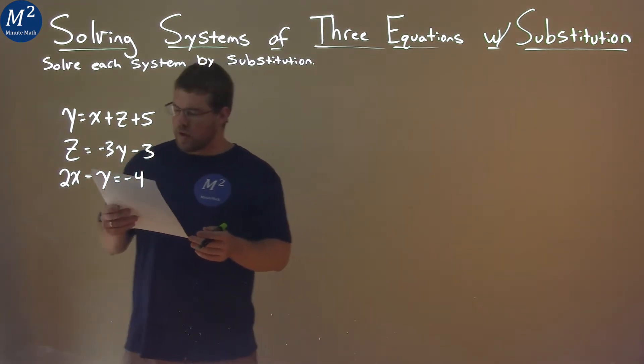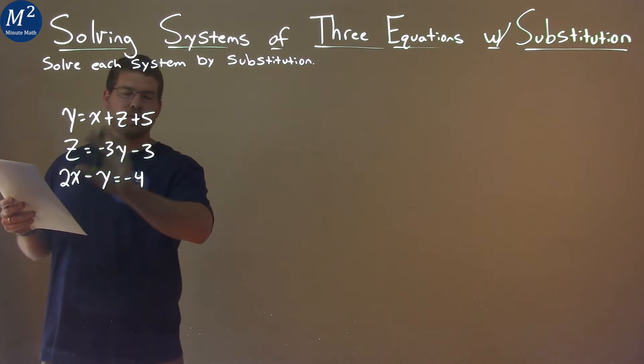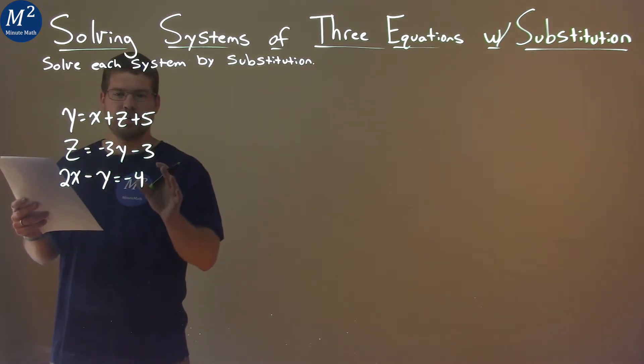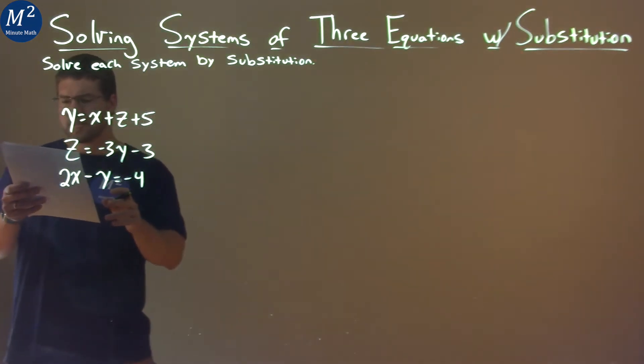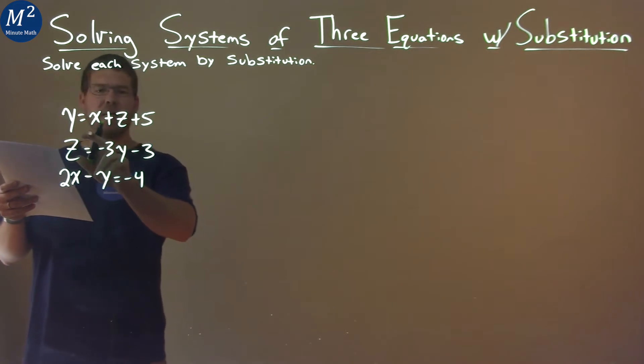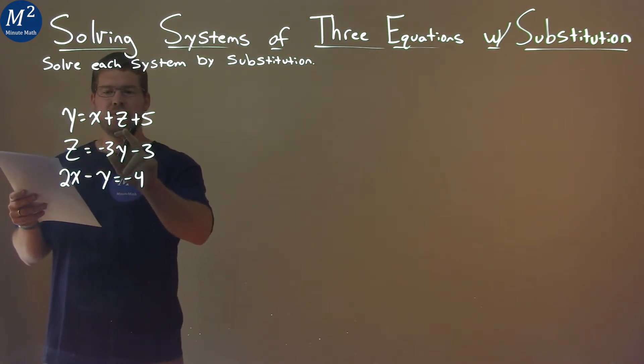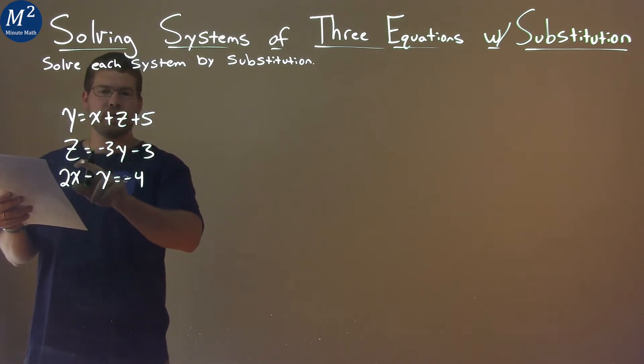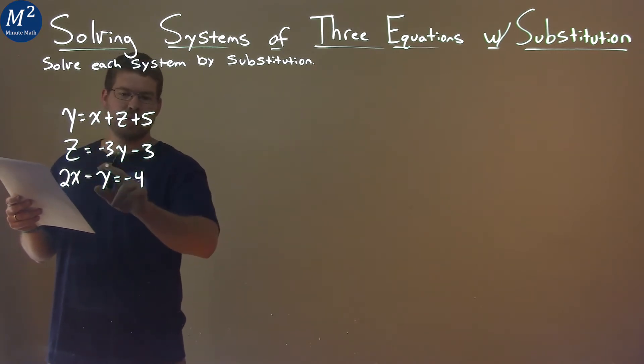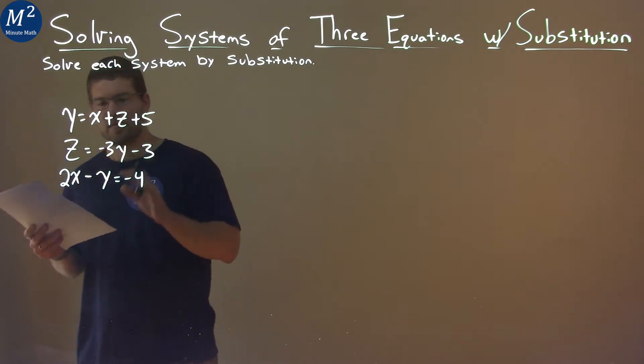Well, first thing I want to do is look and map out what I'm going to do. I see my first equation has y equals x and z, and the second equation has z equals something with y. So I'm going to substitute this negative 3y minus 3 in for this z, and I'll have an equation with just x's and y's.